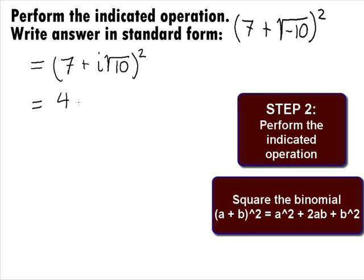For our problem, we will get 7 squared gives us 49 plus 2 times 7 times i square root of 10 gives us 14i square root of 10 plus i square root of 10 squared is i squared times 10.